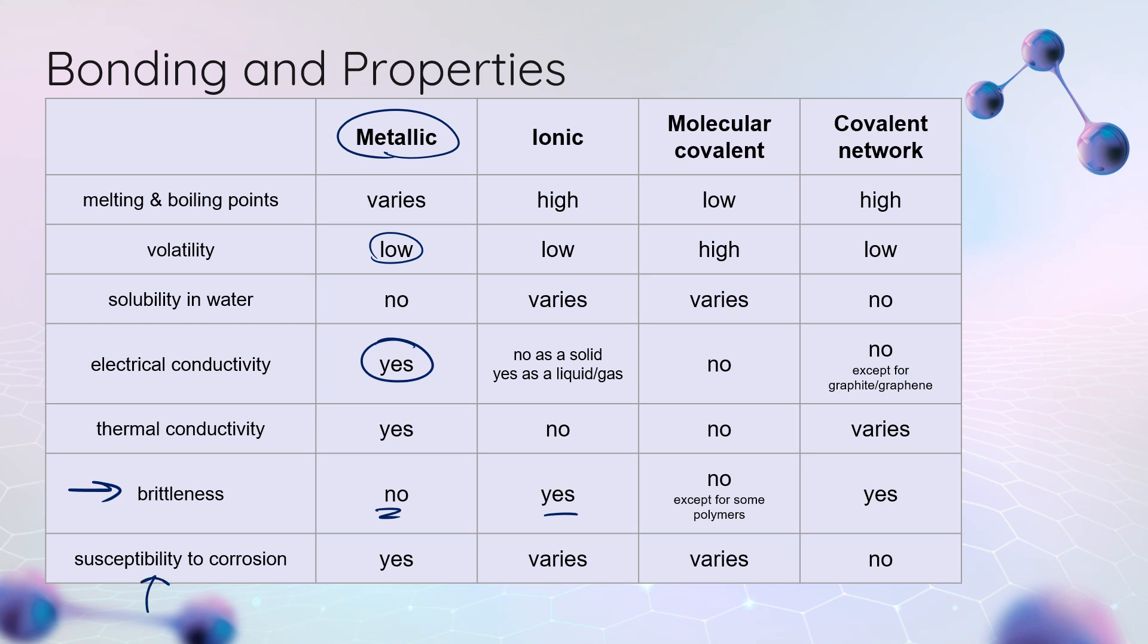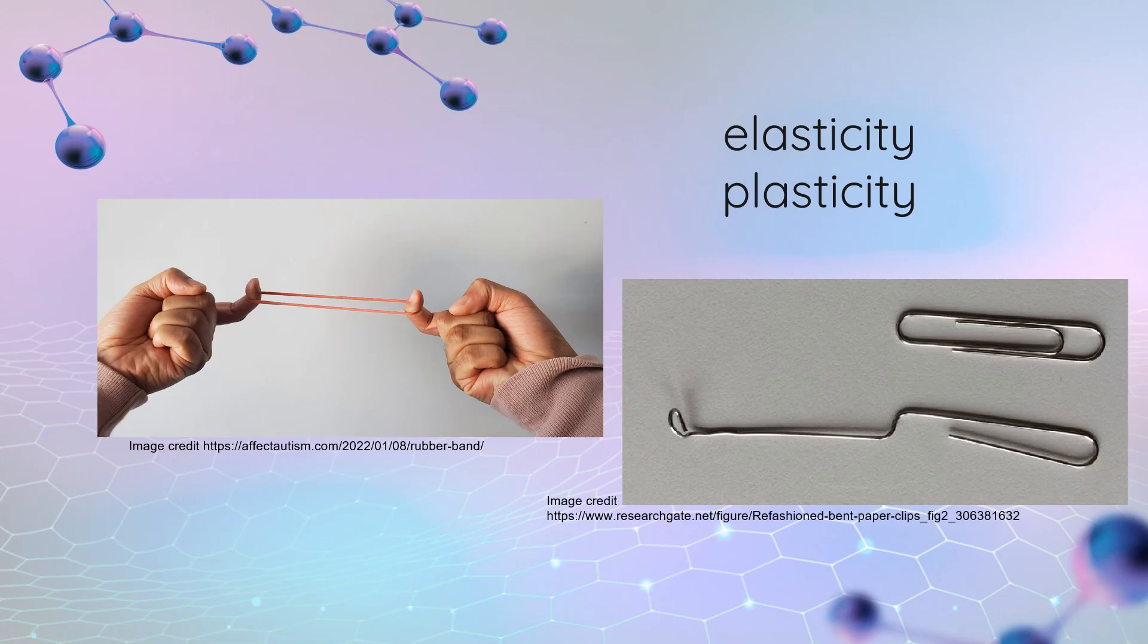Susceptibility to corrosion. This is the likelihood of a substance rusting. Metals in the presence of water and oxygen are far more likely to rust, whereas a covalent network solid like silicon or diamond, probably not going to see a lot of rusting happening. Two other interesting properties that vary amongst our different types of bonds are elasticity and plasticity.